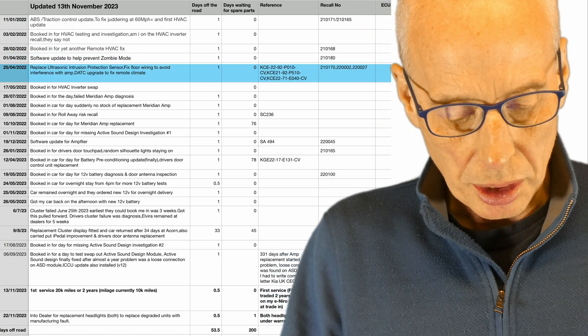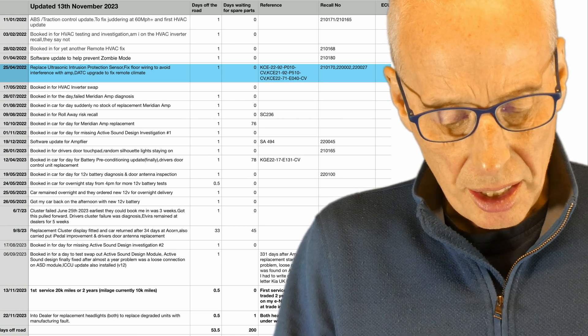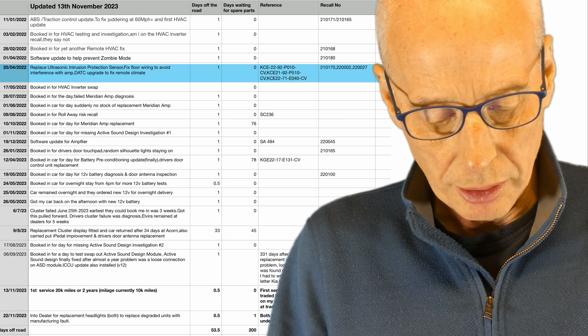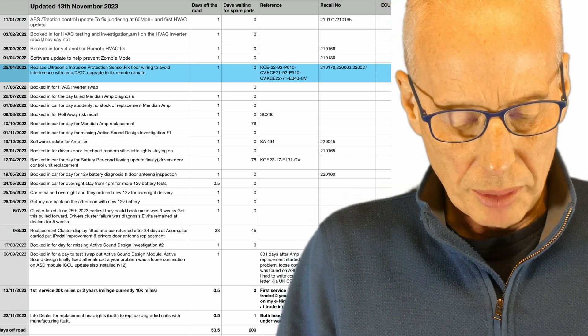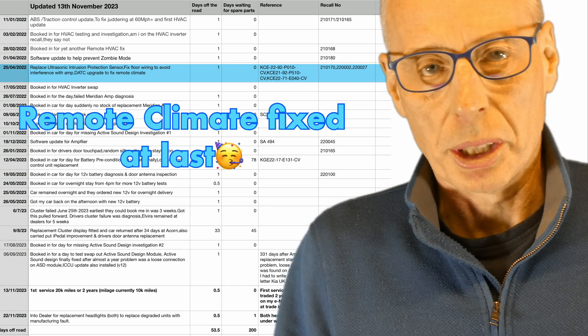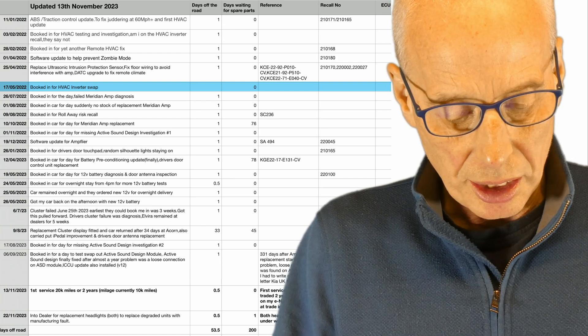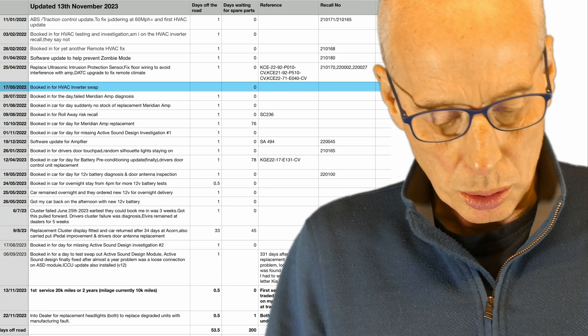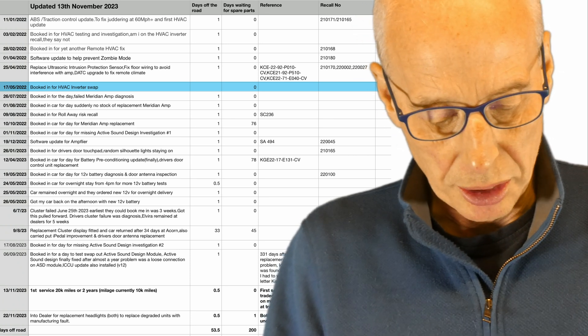The 25th of April '22, they replaced the ultrasonic intrusion detector, that's the sensor, and they fixed the floor wiring to avoid interference with the amplifier. They also applied the DATC upgrade to fix the climate control, that's the remote climate control. The 17th of May '22, they decided that it was within the recall remit for the climate control inverter swap, so that was done.